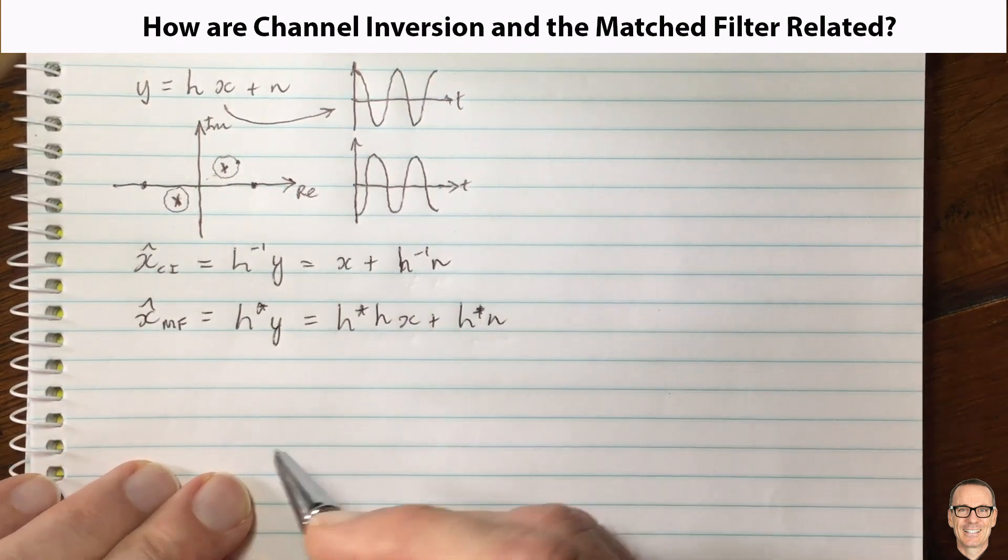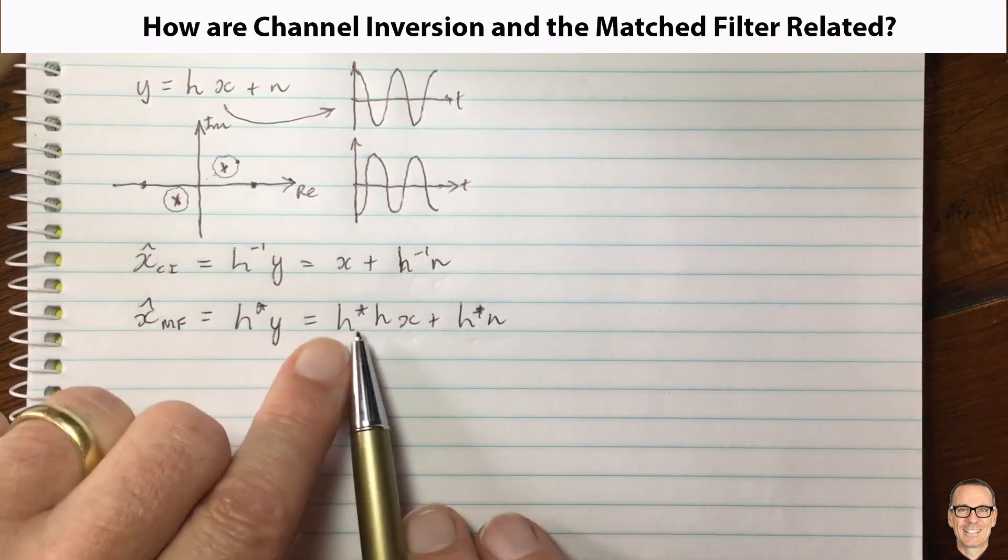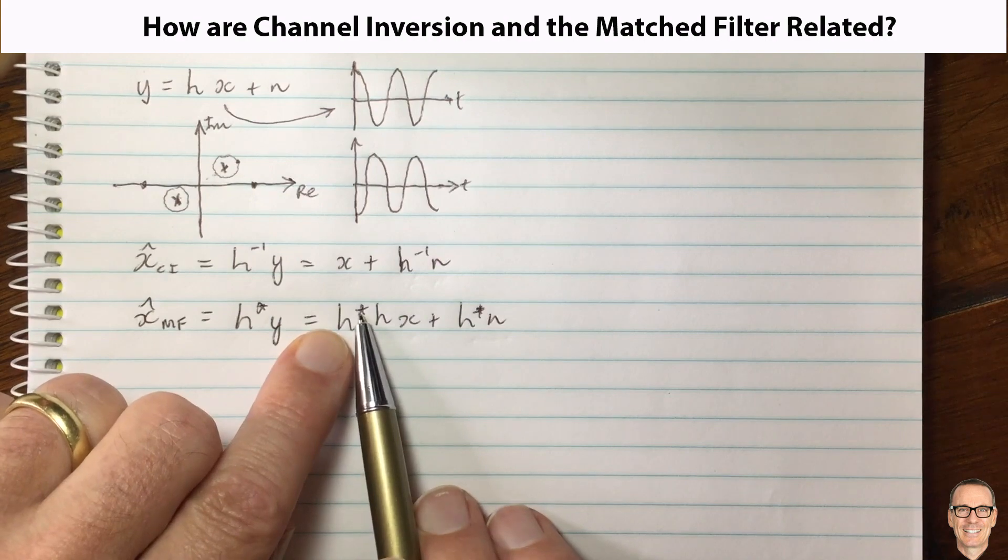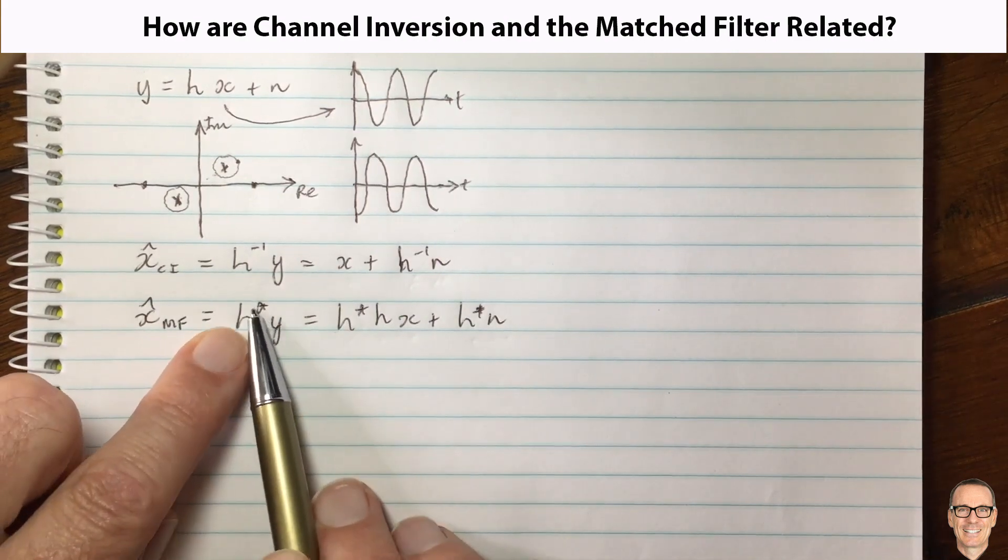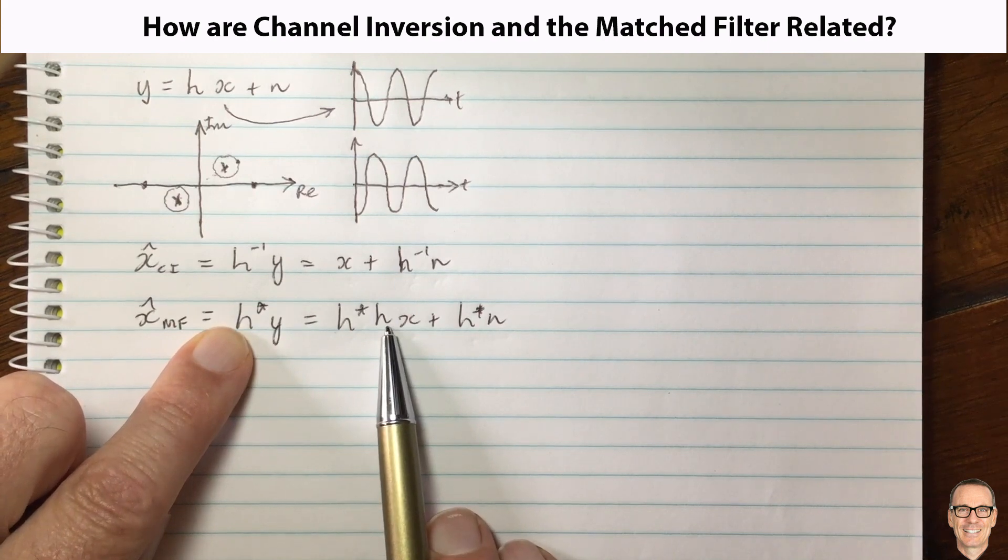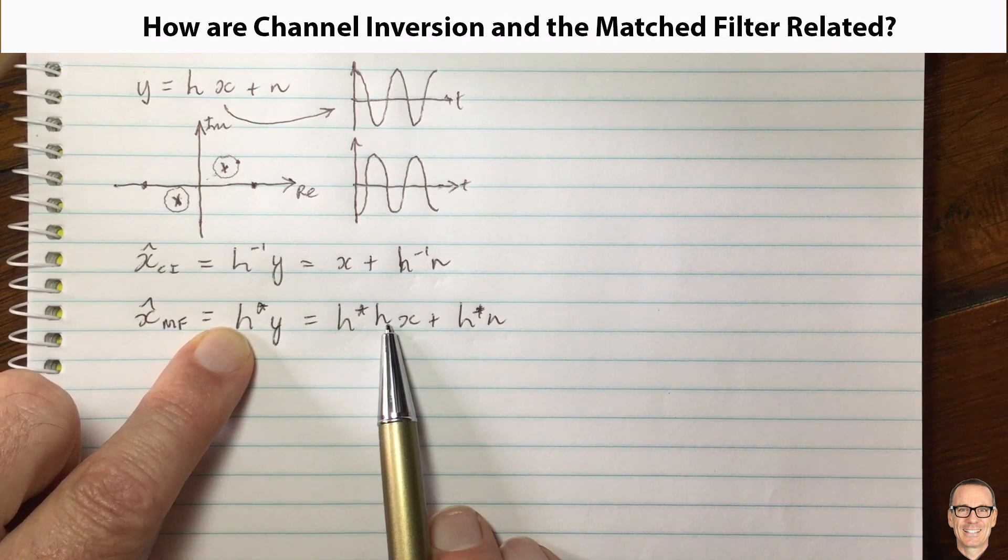And what is so good about this way, and why is it called a matched filter? Because h-complex-conjugate times h, your receive filter is matched to the channel, so that's why it's called a matched filter. And there's another video on this channel with more information about matched filters if you check the details below the video.